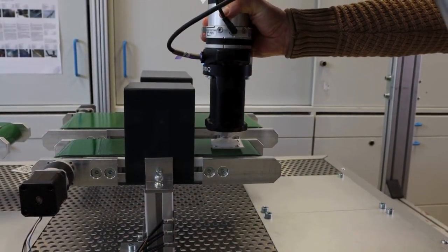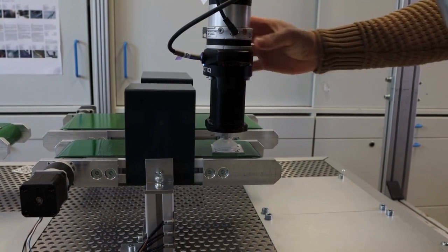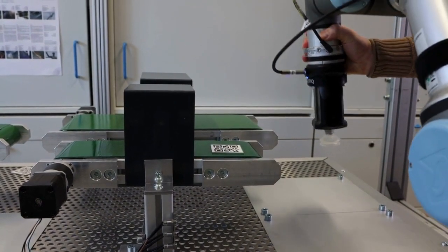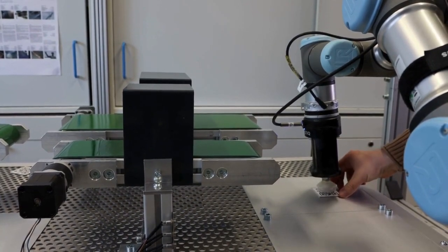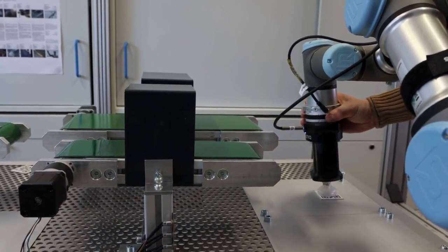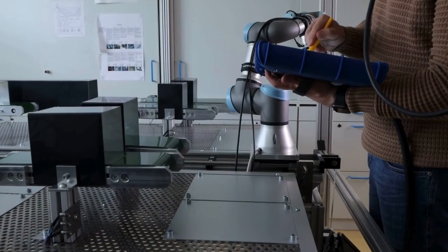Um eine schnellstmögliche Erstellung von einfachen Anwendungen gewährleisten zu können, kann der kollaborative Roboter direkt durch die gewünschten Bewegungen manuell geführt werden. Dabei werden die Bewegungen in Echtzeit aufgezeichnet und in ein Programm umgewandelt.